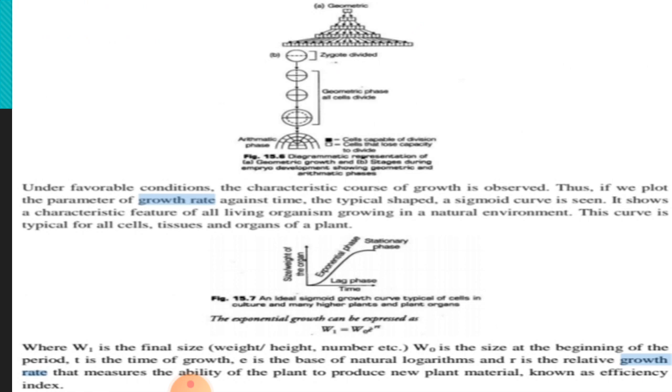Under favorable conditions, the characteristic course of growth is observed. Thus, if we plot the parameter of growth rate against time, the typical shape of a sigmoid curve is seen. What happens in a sigmoid type? It shows a characteristic feature of all living organisms growing in a natural environment. This curve is typical for all cells, tissues, and organisms.